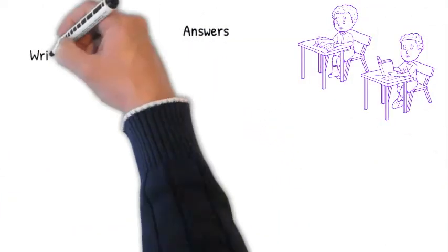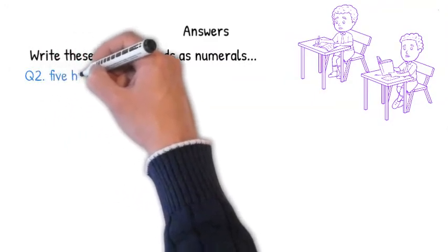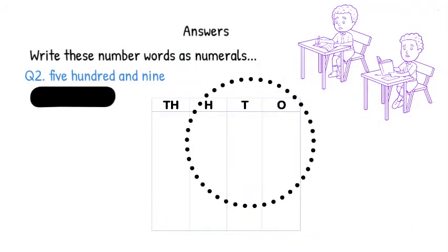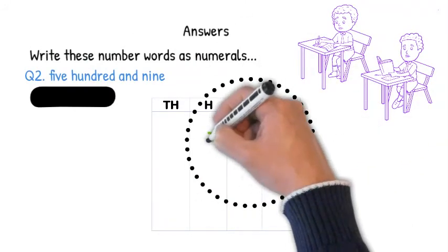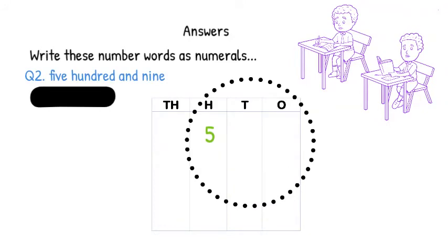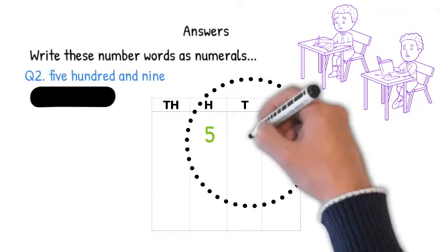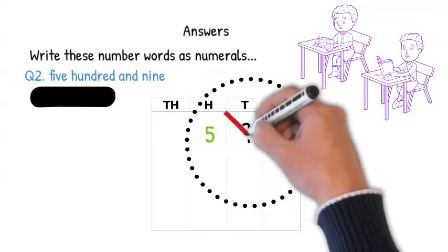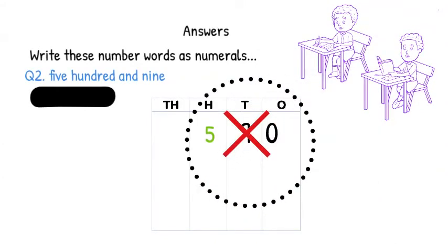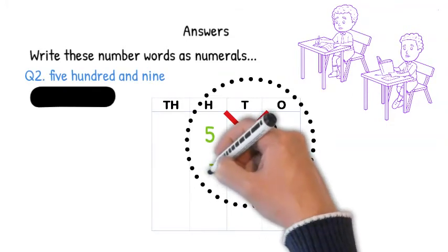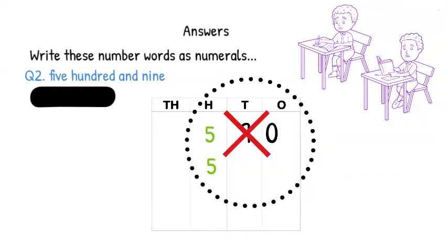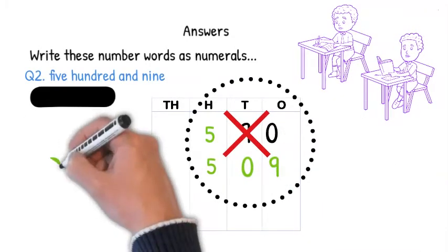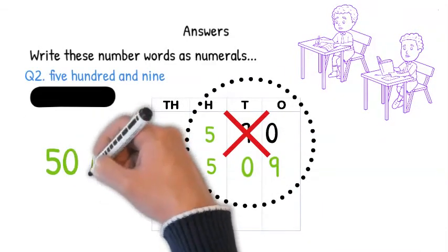This one was a little trickier. Say it aloud with me, 509. We know this is a three-digit number and that there are five hundreds but the next number we can say aloud is nine. Is this nine tens? No, that's right. Because then the number would be 590. We have to place a zero in the tens place to hold the value of the number. Therefore, the answer is 509.